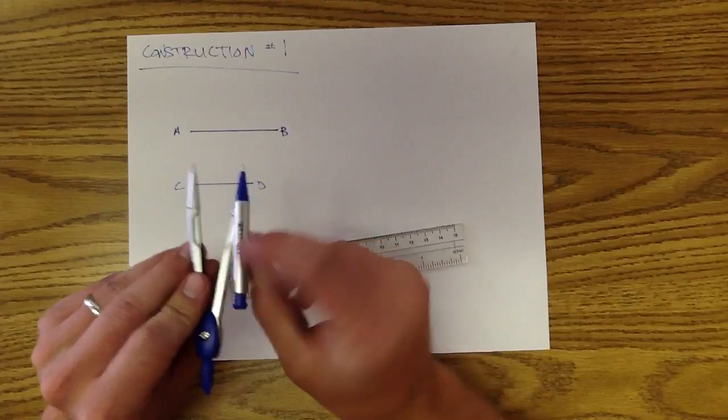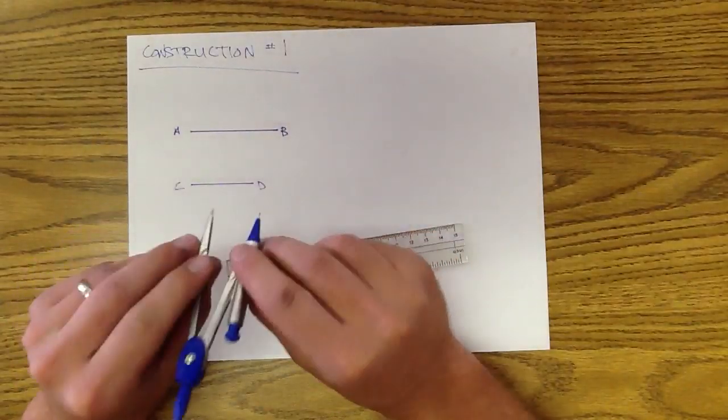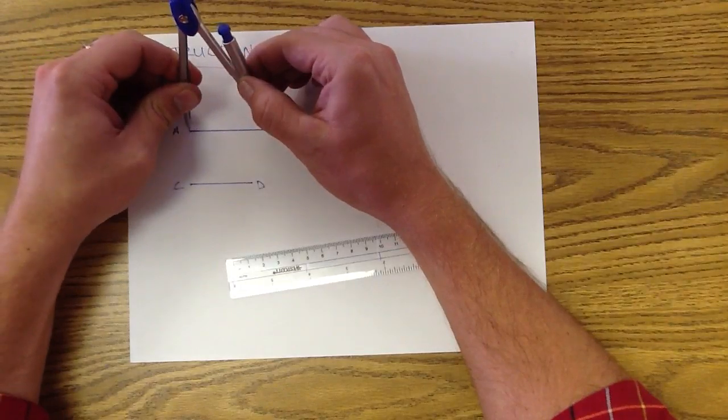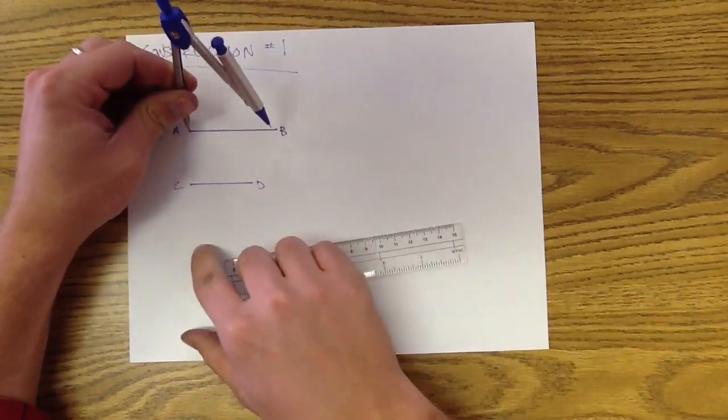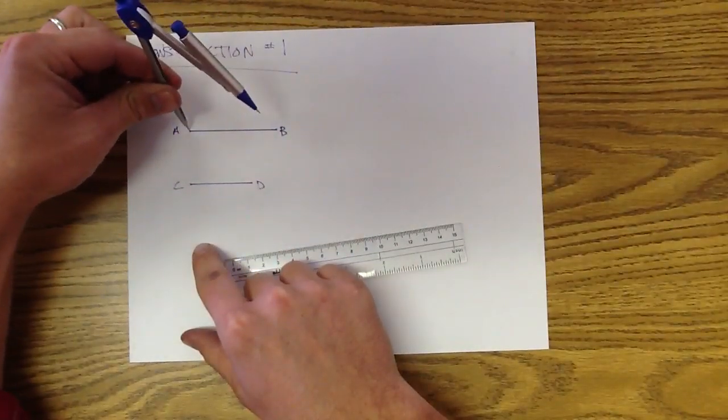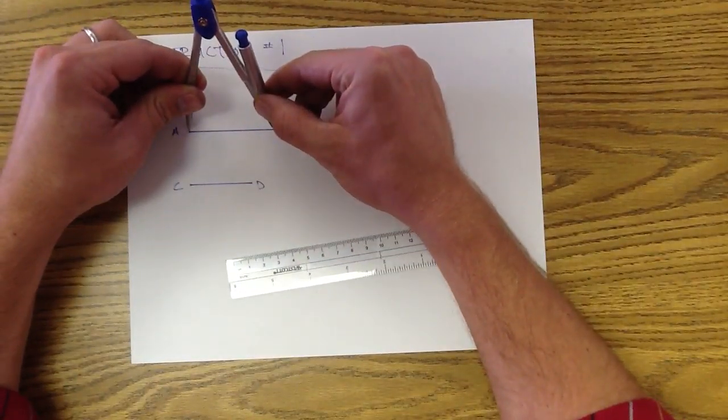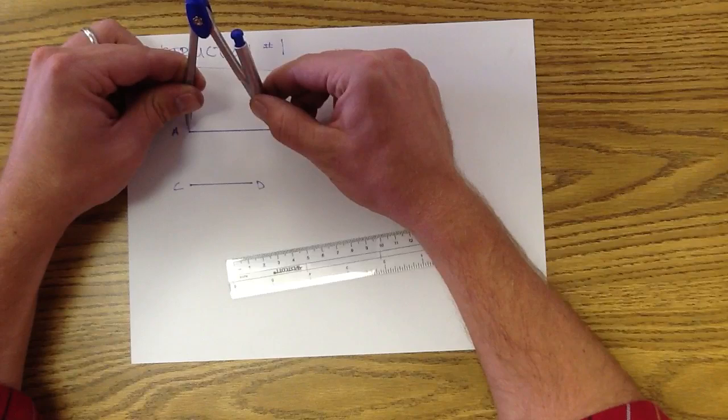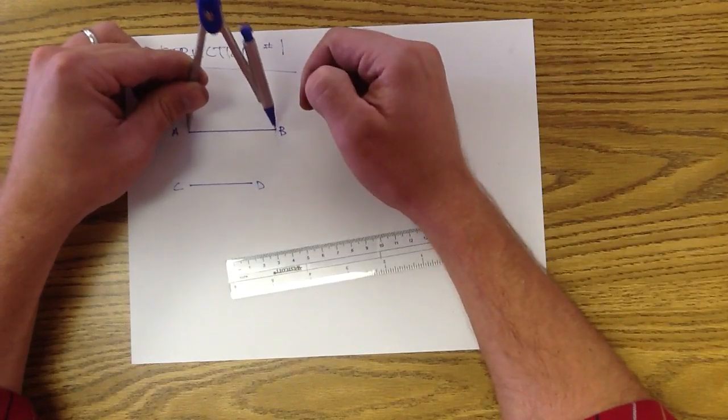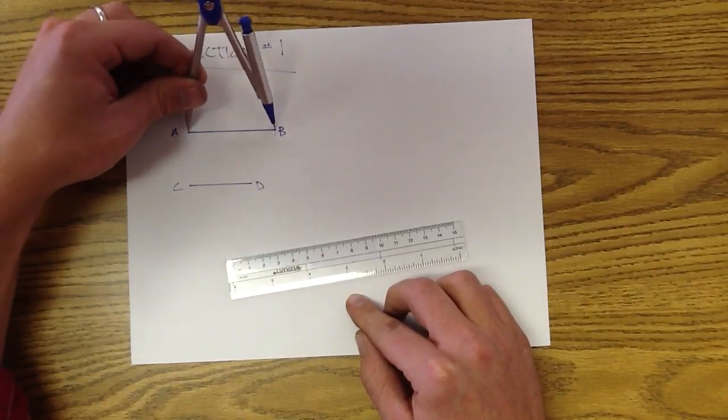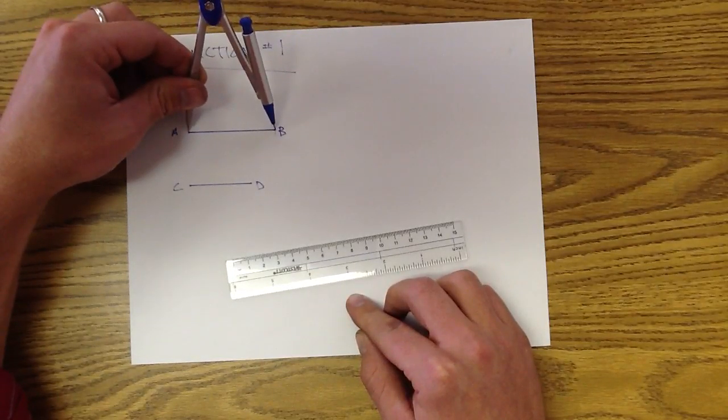You can use your compass here, and this is a compass, to designate or figure out what that length is. So if you wanted to measure the length of AB with your compass, you'd take the point of your compass, put that on point A, and pull it apart until the lead or pencil that you have matches up with B. If you drew a little arc there, my compass now, the distance from point to lead, is the length AB.